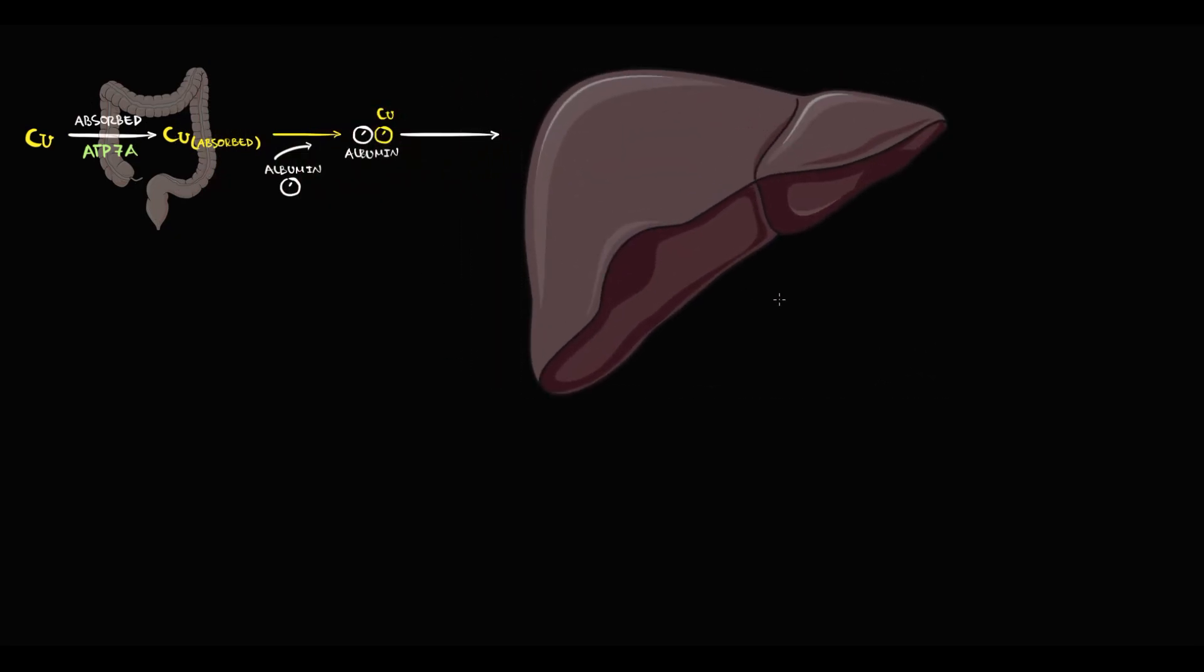So, when we consume some copper with diet, copper comes into the small intestine where copper undergoes reabsorption. This reabsorption is provided by a specific protein called ATP7A. Once copper is reabsorbed, albumin immediately binds to copper with formation of albumin-copper transporting complex. And in this form, albumin delivers copper to liver tissue.